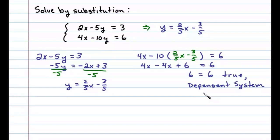Now when we have a dependent system, we present our solutions using the notation x comma mx plus b. In this case, slope-intercept form for these lines is two-fifths x minus three-fifths. So therefore, our answer is the set of all ordered pairs with the form x comma two-fifths x minus three-fifths.